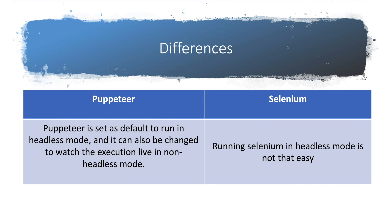Puppeteer is set as default to run in headless mode, and it can also be changed to watch the execution live in non-headless mode. With Puppeteer, by default it runs in headless mode. Whenever you run it, you don't require Chrome to open and it automatically starts. But if you want to debug, you can watch execution in non-headless mode as well. It will be very useful when you're running with Docker and on CircleCI. With Selenium, running in headless mode is not that easy. You have to do many setups or use APIs.